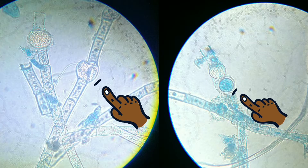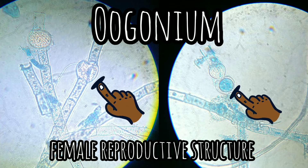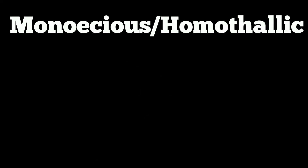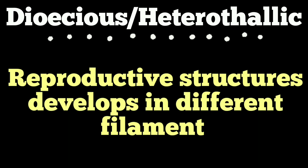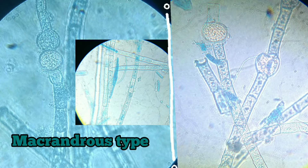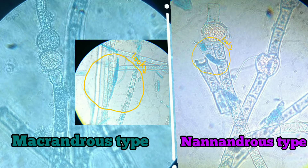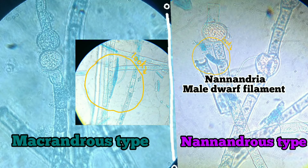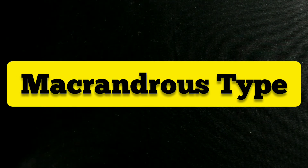In our previous video we came to know that the female reproductive structure is the oogonium and the male reproductive structure is the antheridium. Some species are monoecious or homothallic, meaning oogonia and antheridia are developed on the same plant or the same filament. Others are dioecious and heterothallic, meaning reproductive structures are developed on different filaments. Depending on this distribution and structures, species of Oedogonium may be grouped as Macrandrous type and Nannandrous type.